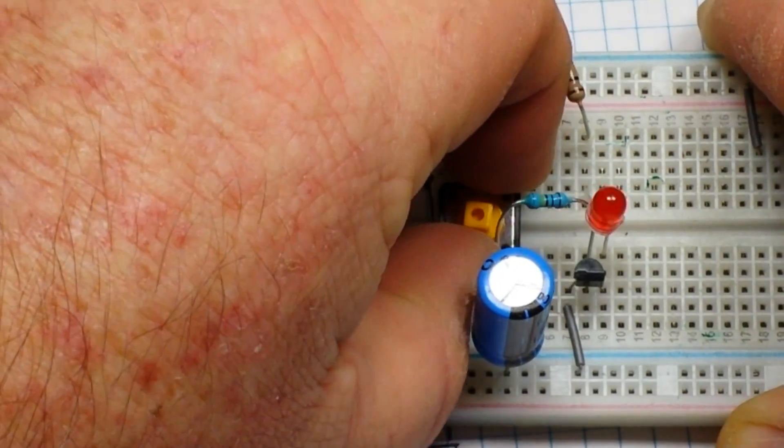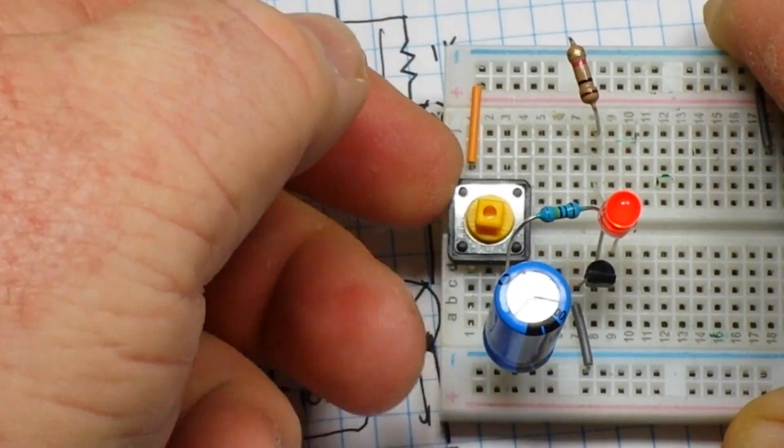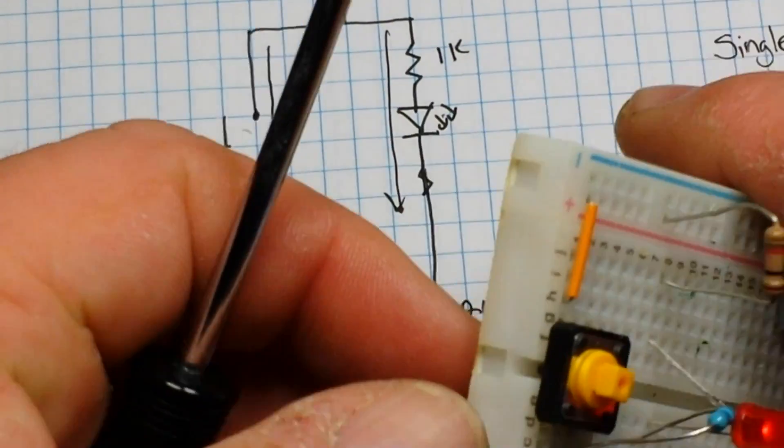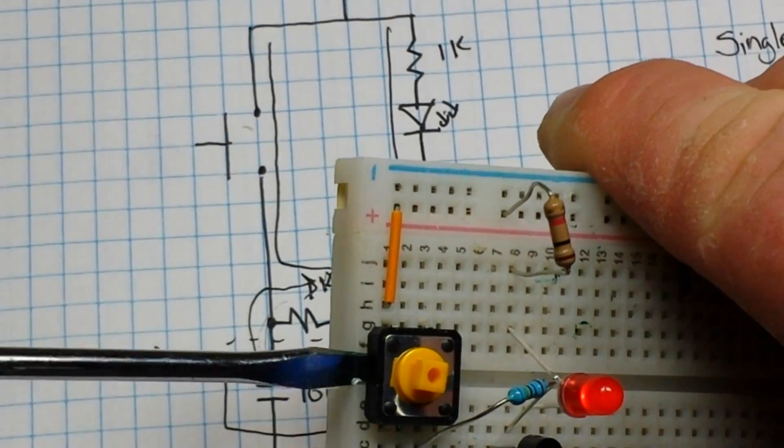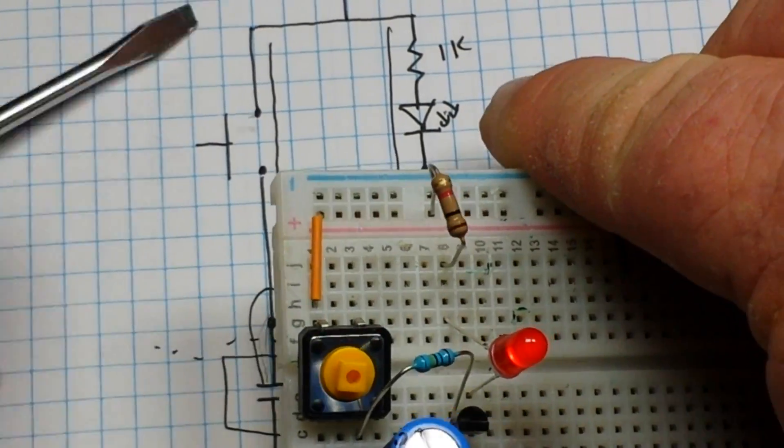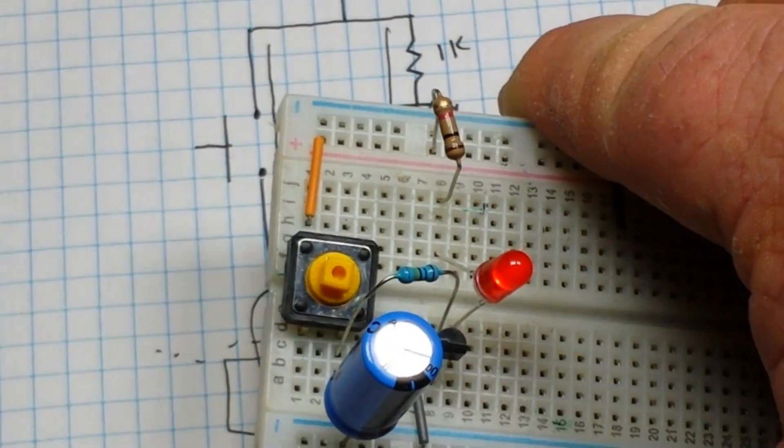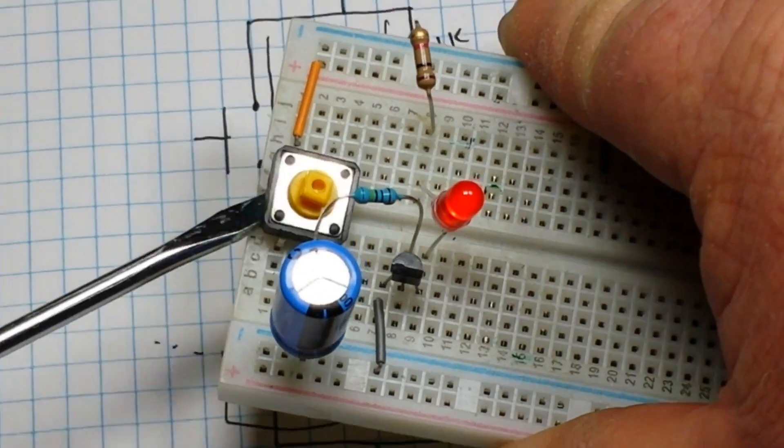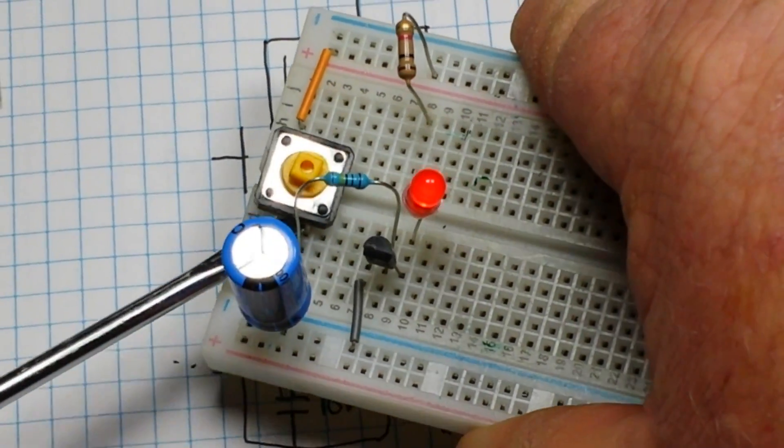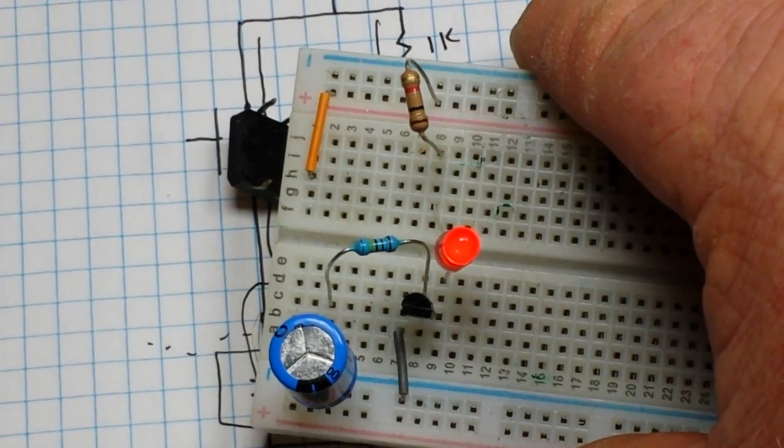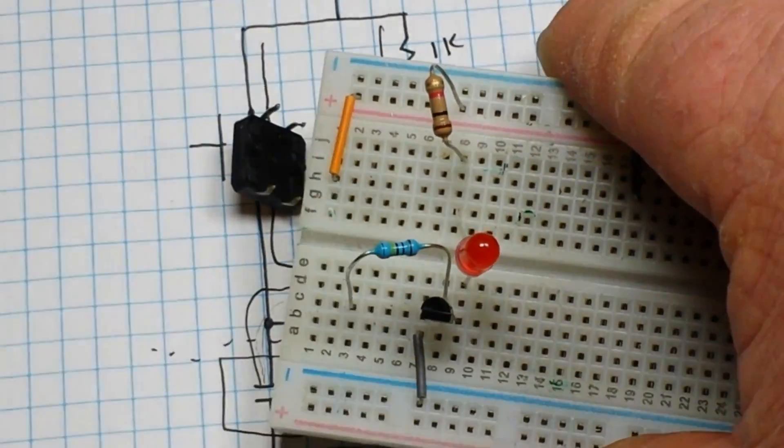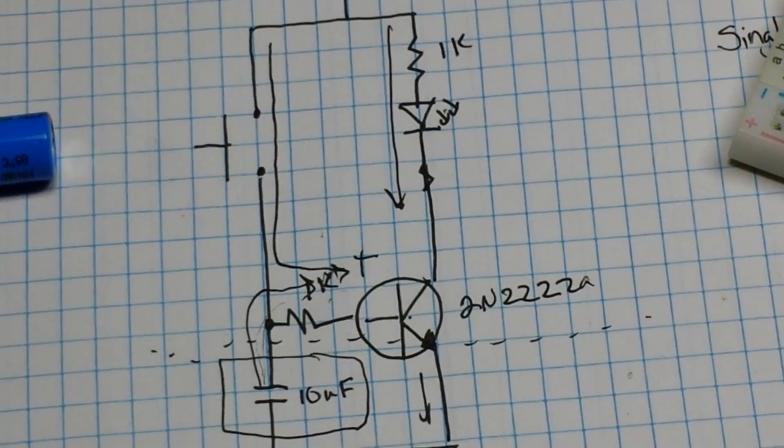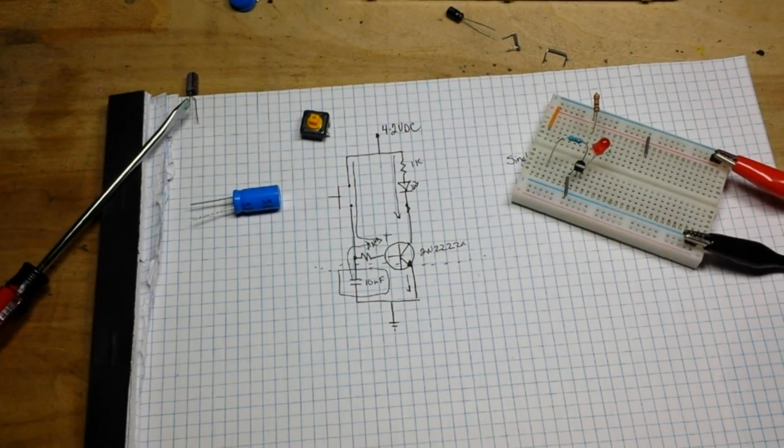And I can prove that again here by simply pulling off the switch. The switch wants to come out. Usually you can't get a switch to stay in a breadboard, in this case it won't want to come out. As you can see the LED is still lit. Try not to disturb the capacitor. There we go. So you can see it's still lit, but if I pop out the capacitor it goes out, proving the science of the circuit.